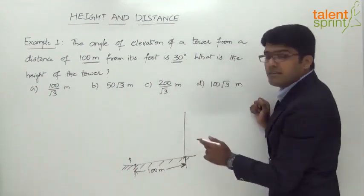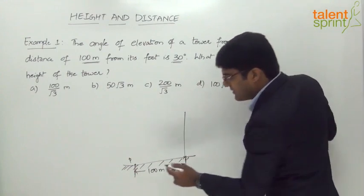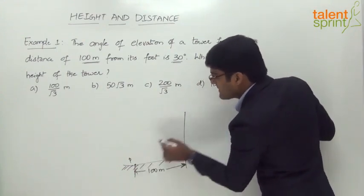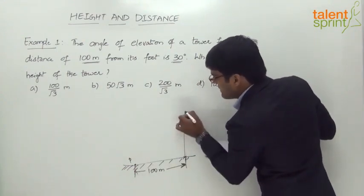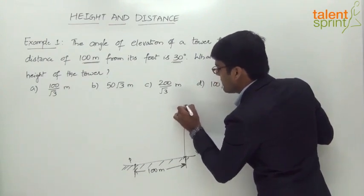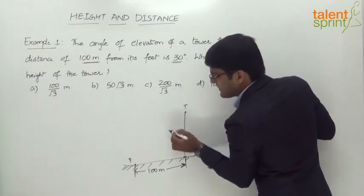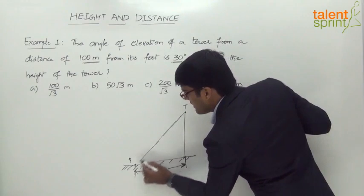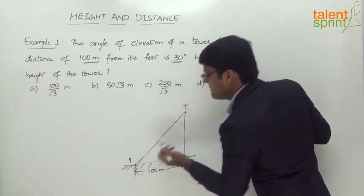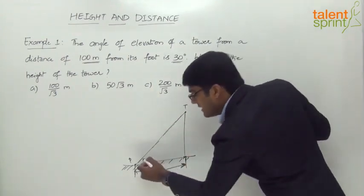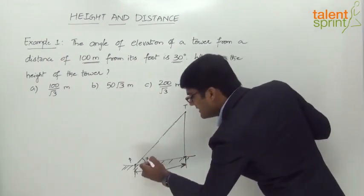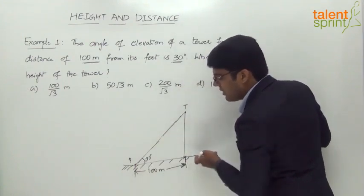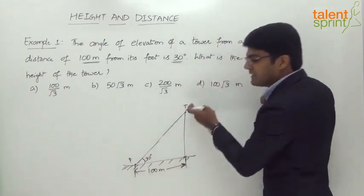The angle of elevation of the tower is 30 degrees. The angle of elevation is the angle made by the line of sight with the horizontal. If the top of the tower is T, then the line joining T and point P is the line of sight, and the angle between the horizontal and this line of sight is 30 degrees.